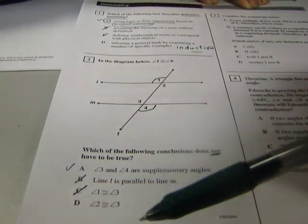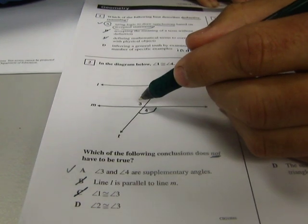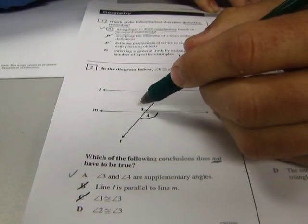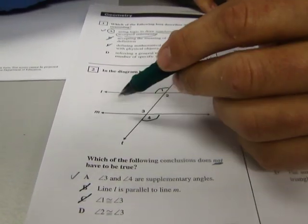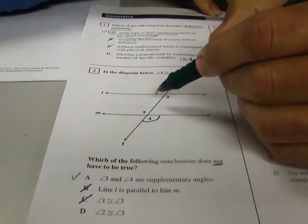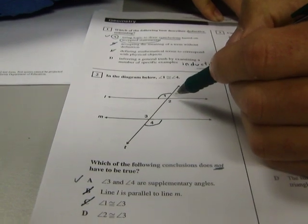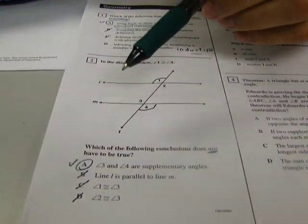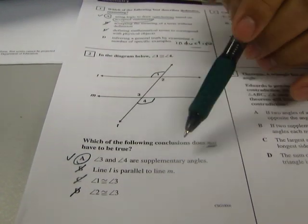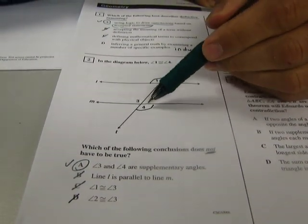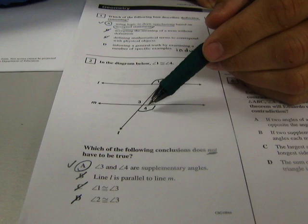And last, angle two is congruent to angle three. Well, angle two and angle three are alternate interior angles. And again, if the lines are parallel, which is true because the alternate exterior angles are parallel, then the alternate interior angles have to also be congruent. So that can't be the answer. So the answer again is A. Angle three and angle four do not need to be supplementary. They're definitely congruent. The only way they would be supplementary is if they're both 90. So the answer is A.